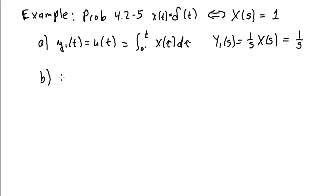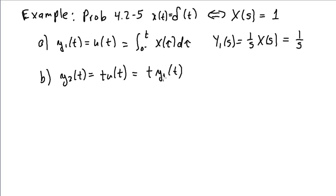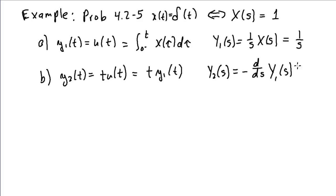Another example: y2 of t is t times u of t. Rather than integrating again, let's use the time multiplication property — also called the frequency differentiation property. This says multiplying by minus t in the time domain corresponds to differentiating the Laplace transform with respect to s. So Y2 of s equals the negative derivative of Y1 of s with respect to s. Since Y1 of s is 1 over s, its derivative is minus 1 over s squared, and the minus signs cancel, giving 1 over s squared.